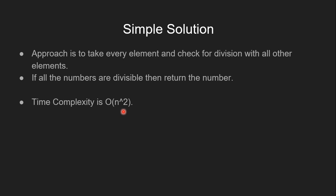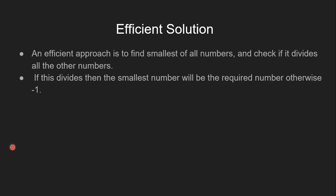Now let's know the efficient solution. The approach is to find the smallest of all numbers and check if it divides all the other numbers. If it divides, then the smallest element will be the required number, otherwise -1.